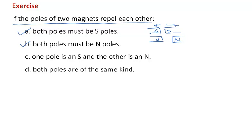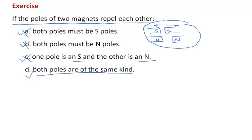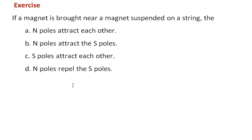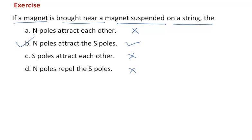Option B is also only partly correct. Option C — one pole is south and the other is north — is wrong, because if south and north are brought closer there will be attraction, not repulsion. Option D states both poles are of the same kind, which is correct — that is why option D is correct. Regarding the next question: if a magnet is brought near another magnet suspended on a string, north poles repel each other, not attract. North poles attract the south pole — this is correct. So option B is correct.